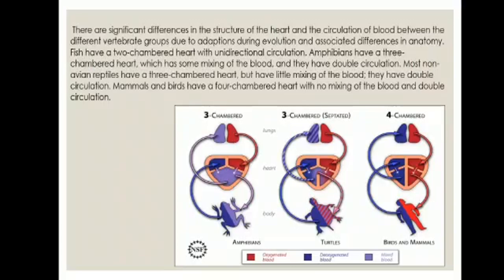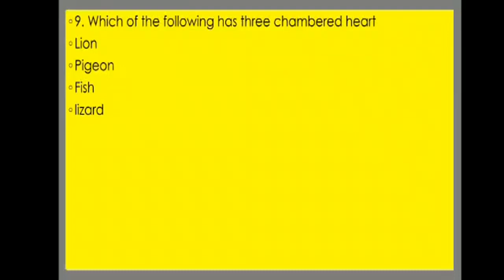Looking at the chambers of the heart — two-chambered, three-chambered, or four-chambered. Fish have a two-chambered heart with unidirectional circulation. Amphibians have a three-chambered heart with some mixing of blood and double circulation. Most non-avian reptiles have a three-chambered heart with little mixing and double circulation. Mammals and birds have a four-chambered heart with no mixing and double circulation. Ninth question: Which of the following has a three-chambered heart — lion, pigeon, fish, or lizard? The right option is lizard.